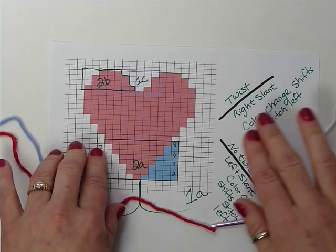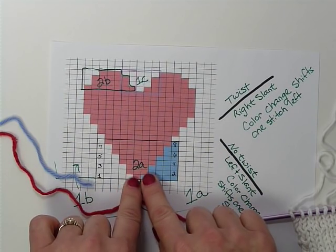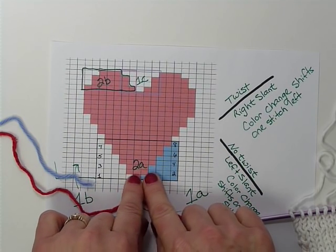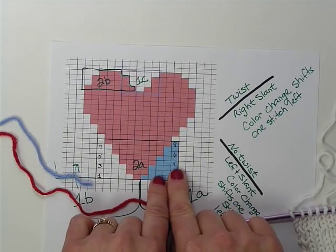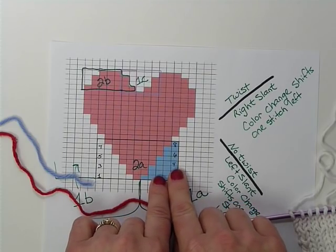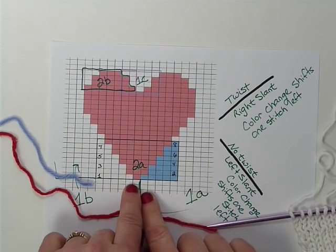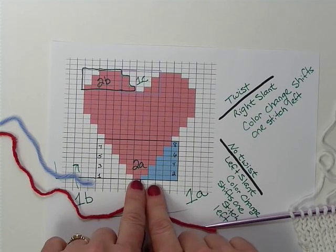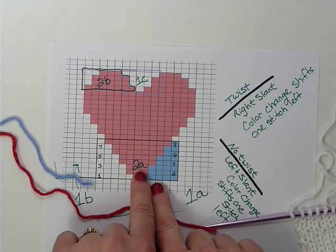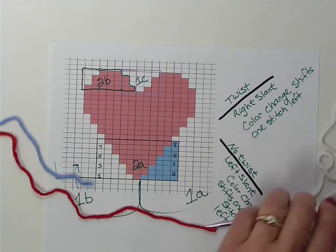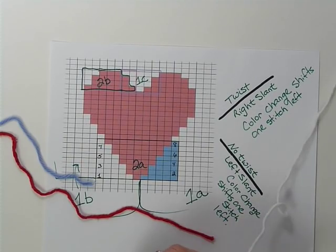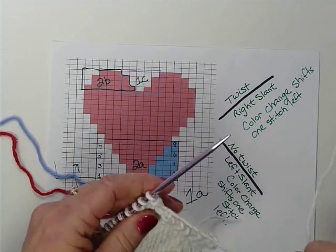The right slant color change, your color is going to shift one to the right from where it exists underneath. With a left slant, your color change is going to switch one to the left. I'll show you how that works as we go along. Hopefully you'll be able to follow. I didn't just confuse the heck out of you.